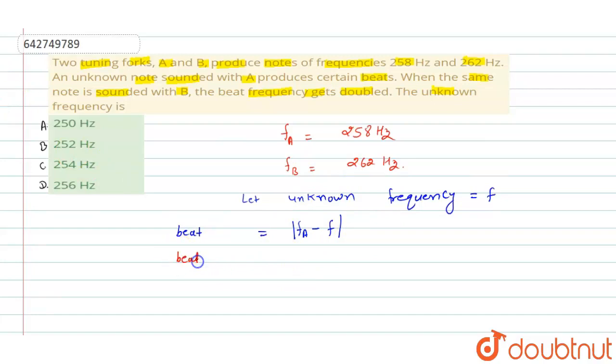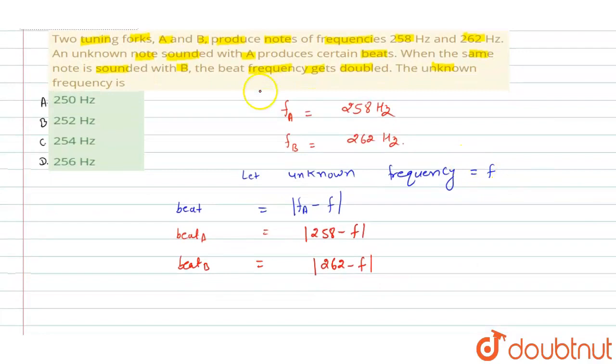Now we have to put the values. So beat for A is equal to f_A, that is given 258, so 258 minus f. Similarly beat of B we can calculate by the difference, so this is 262 minus f. And now we have given that beat with B is doubled as compared to A, so we can write here 262 minus f is equal to 2 times 258 minus f.